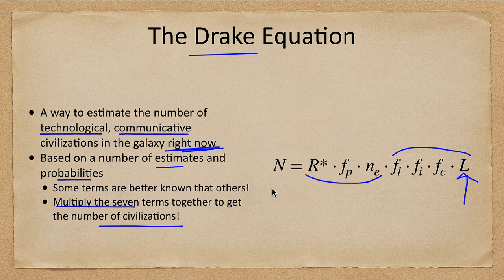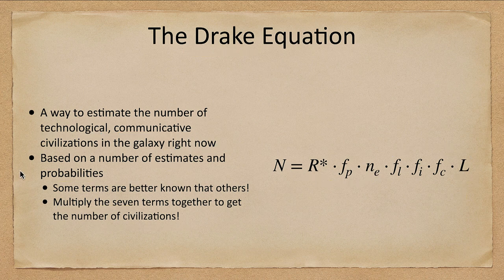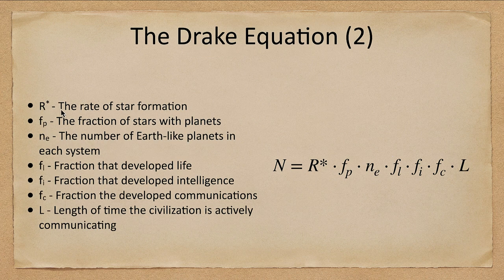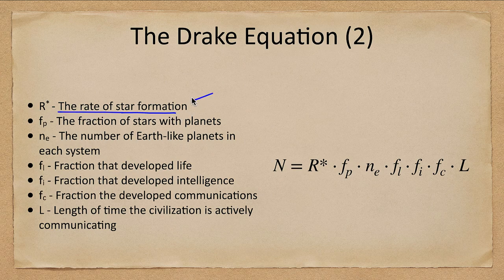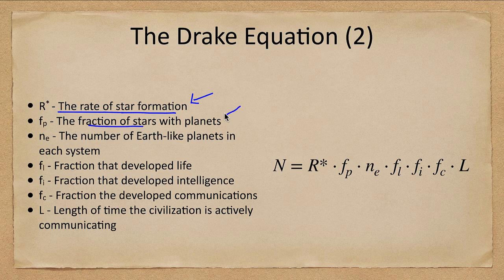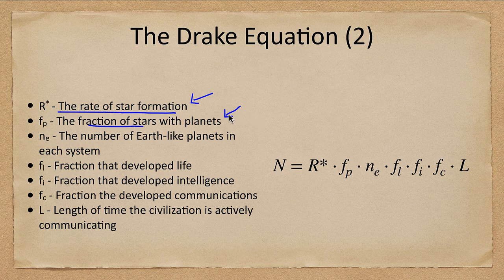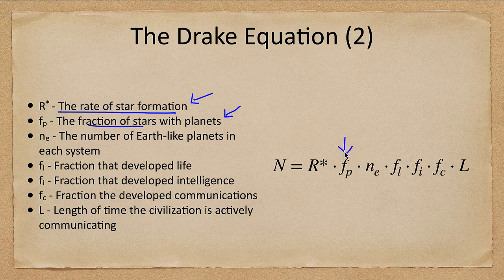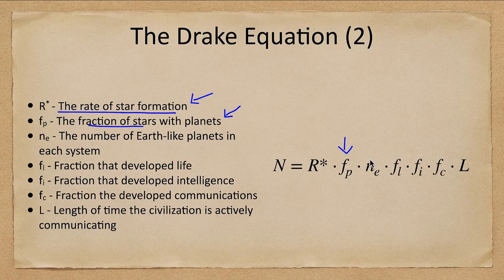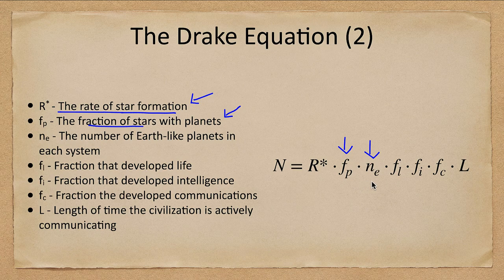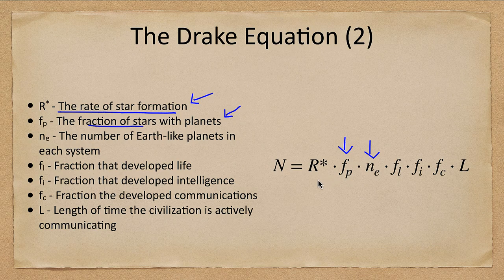Now some of these are known better than others. So the first one is R*, the rate of star formation in the galaxy. That's an astronomical number. And we have a pretty good idea of what that rate is. fp, fraction of stars with planets. We're now finding out that lots of stars have planets. So there are a good number of those. And that one we can probably get a pretty good idea on as well as getting a good estimate of ne, the number of Earth like planets in each system. Is it one? Is it two? How many are close enough and could be within that habitable zone? So we could probably get somewhat reasonable estimates here.